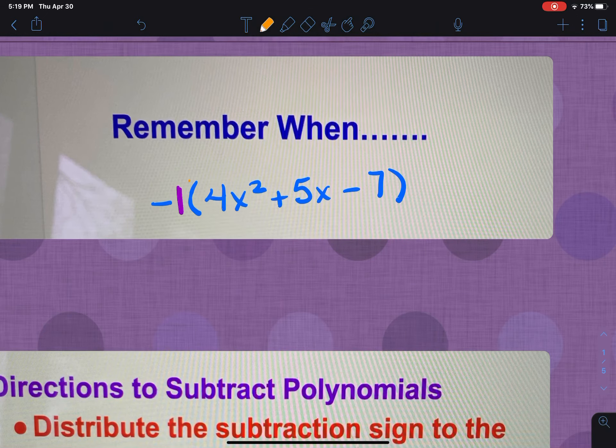when there's a negative out here and there's no number, I have to assume that there's a 1 there. Then my job is going to be to take this and distribute it to each number. So remember, distributing talks about multiplying.